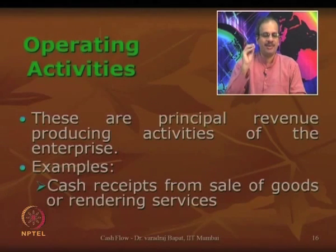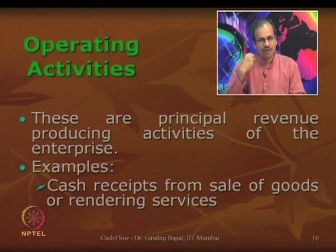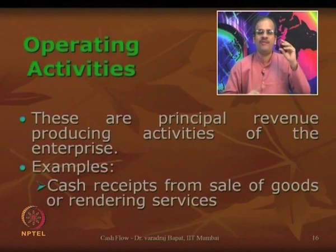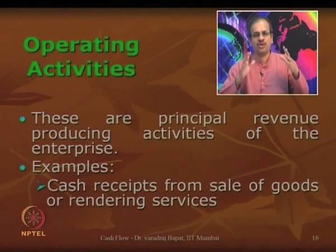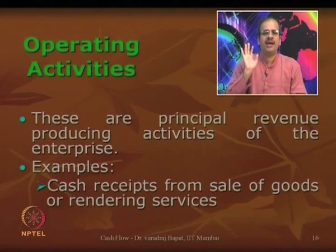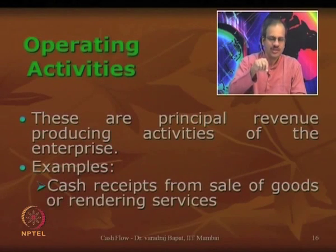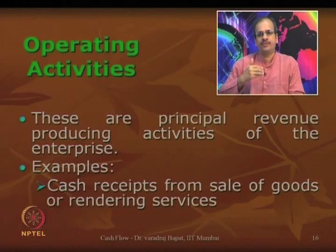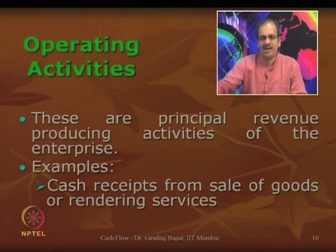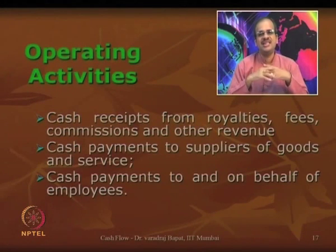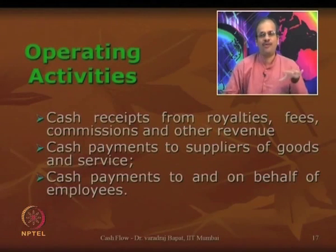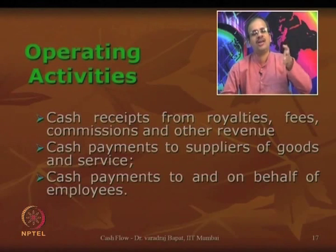Can you think of more examples? For instance, payment of electricity bill — if you are running a shop, business, or office, you will have to pay an electricity bill, which is a day-to-day activity, classifying as an operating activity. Though the definition says 'principal revenue producing,' it covers both receipts of revenue and the expenditure incurred to generate that revenue. A few more examples: cash receipt from royalties, fees, or commission; payment to suppliers of goods; and payments to or on behalf of employees — like salary, wages, and bonus — all are operating activities.